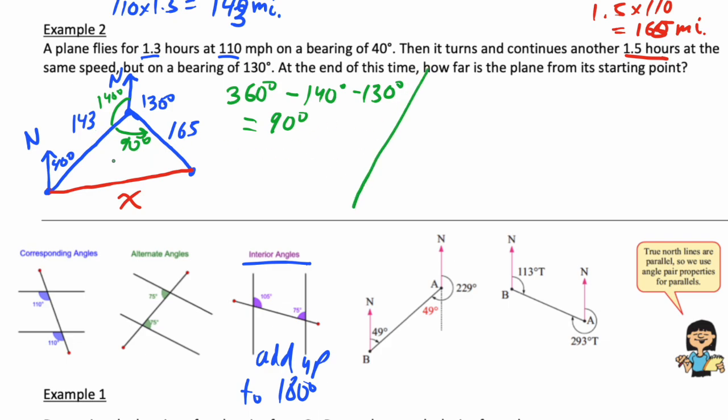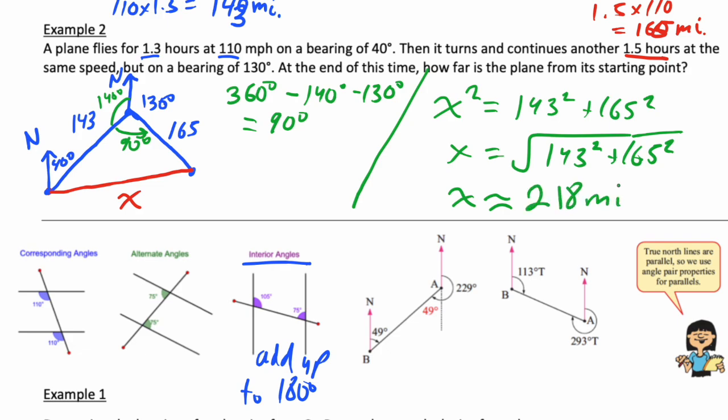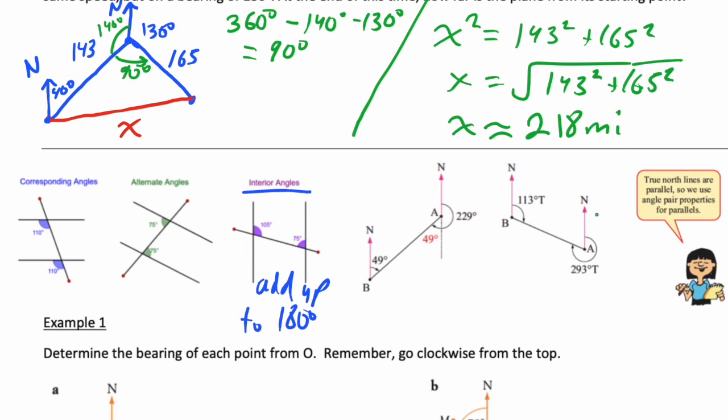To get the other side, use Pythagorean theorem. We have X squared equals 143 squared plus 165 squared. So X equals the square root of 143 squared plus 165 squared. If we type that into our calculator, we get approximately 218 miles. That's how a basic bearing word problem works.